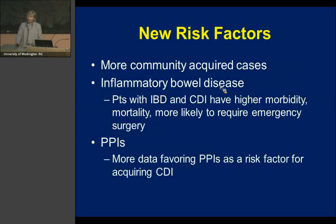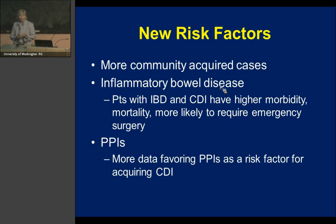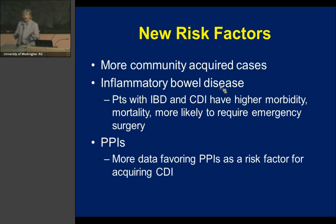In the last 10 years there are some newly recognized risk factors. There are more cases of community-acquired C. difficile in otherwise healthy outpatients. There is a definite increase in C. diff in patients with inflammatory bowel disease — and when they get C. diff, they are sicker and more likely to die or need urgent colectomy. Recent meta-analyses also favor an association of proton pump inhibitors with C. difficile infection.